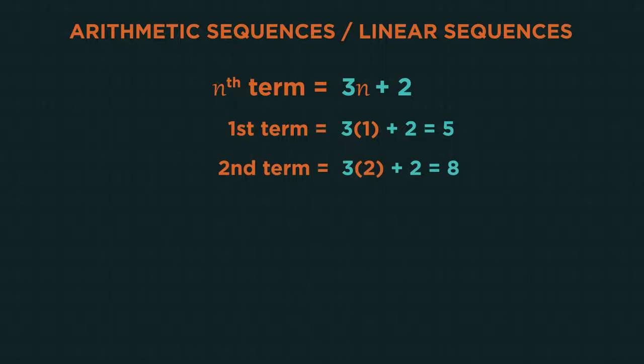For the second term, substitute n equals 2 into the formula. For the fifth term, substitute n equals 5. We can choose any term, the 100th.